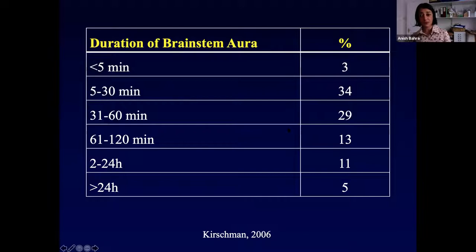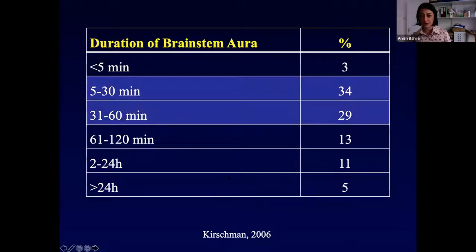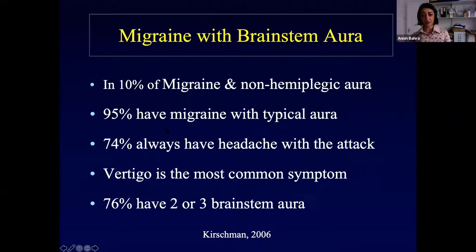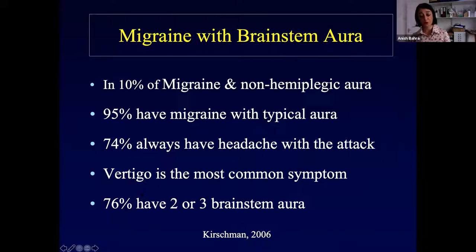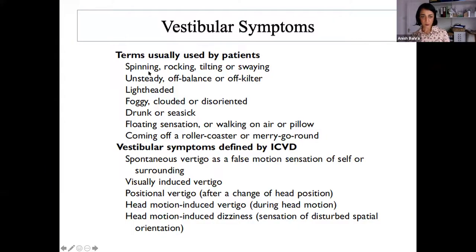Brainstem aura lasts about 30 to 60 minutes on average. It occurs in 10% of those with non-hemiplegic aura; almost all have typical visual, sensory, or language symptoms. 74% always have a headache, meaning a quarter won't have headache — just the aura symptoms. The most common symptom is vertigo, and about three quarters will have at least two or three symptoms. When you get just vertigo alone, we don't call it brainstem aura — that falls under vestibular migraine.